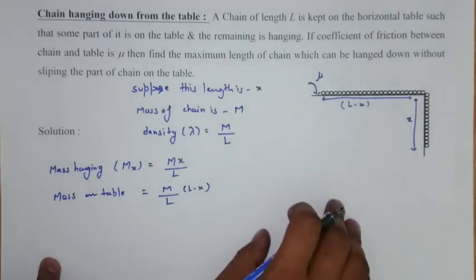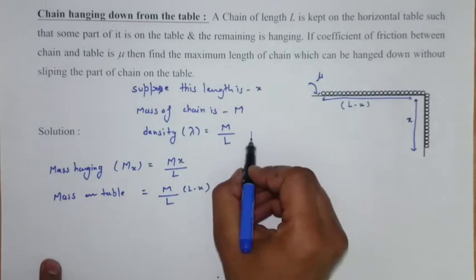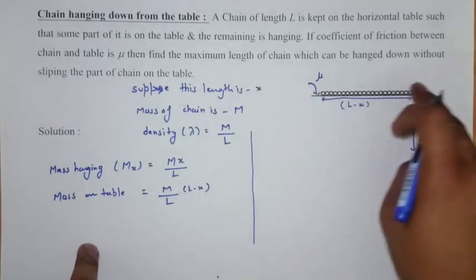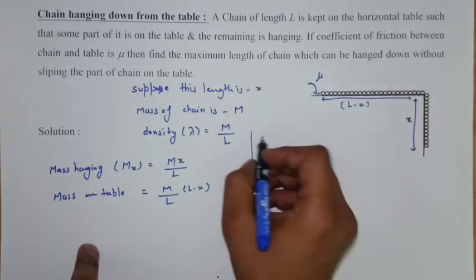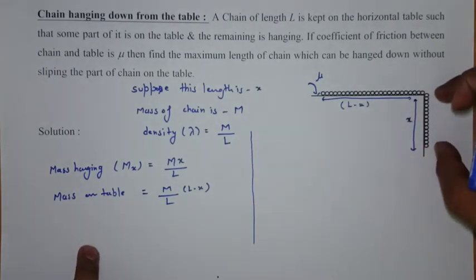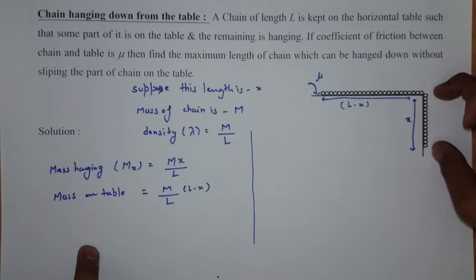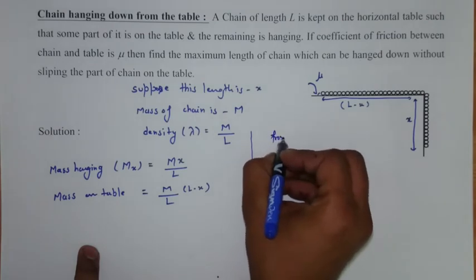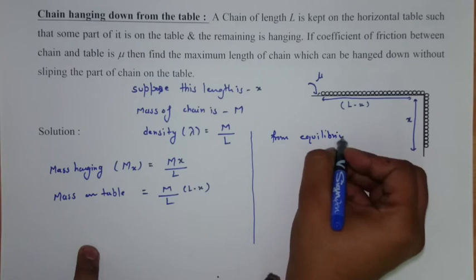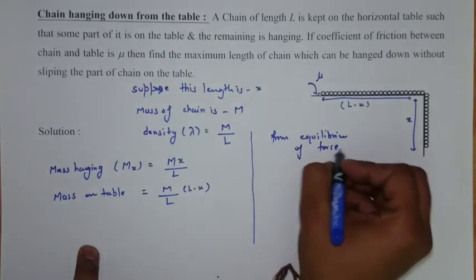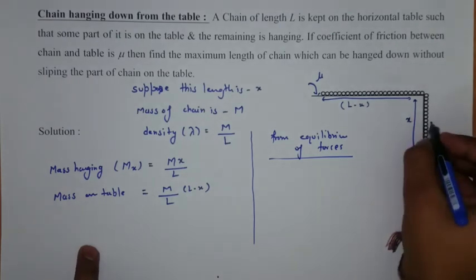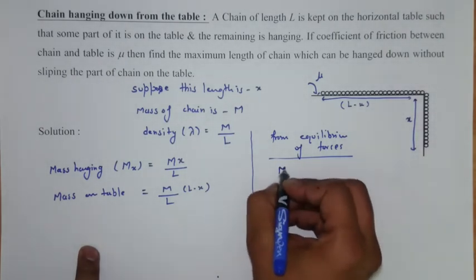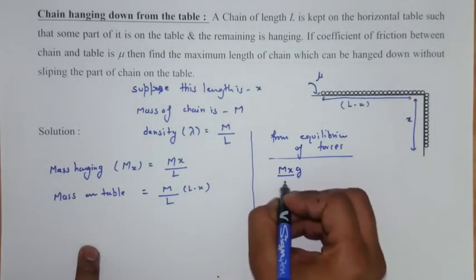So now, we should use the second law of motion. From the equilibrium for this part of the chain to stay on the table, we need to equal the weight of this chain to the force of friction acting on this part of chain. So from equilibrium of forces, mass of the weight of this chain is hanging, the part of chain hanging is Mx over L.